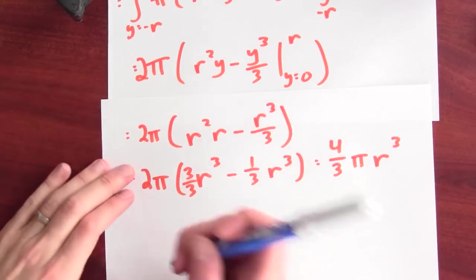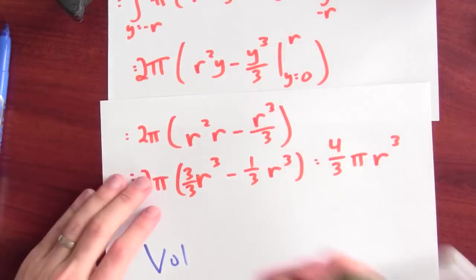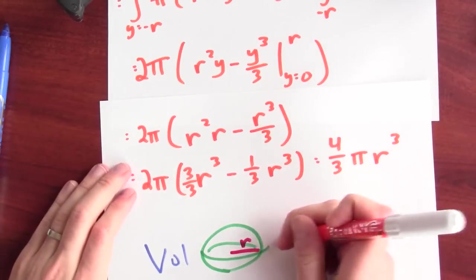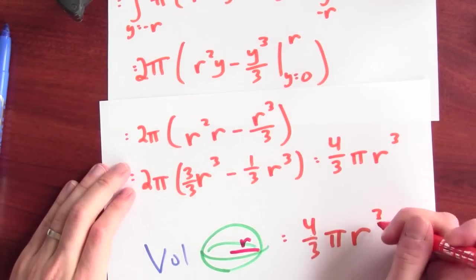We did it. The volume of a sphere here of radius r, we just calculated it. It's 4 thirds pi r cubed.